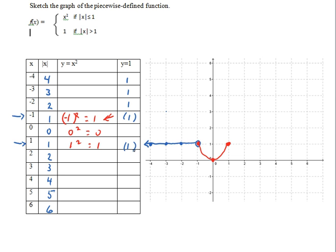So at this point, I would generally put an open circle at 1, 1, but since we already have a closed circle, that is not necessary.